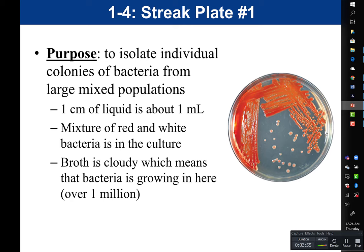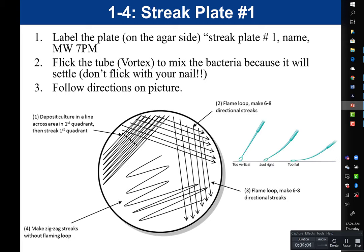We would have our agar plate, and we always label the plate on the agar side — not the lid, because if the lid were to fall off, we don't know what's on the plate. We label along the edge: streak plate number one, your name or initials, your class period, and the date of the experiment.